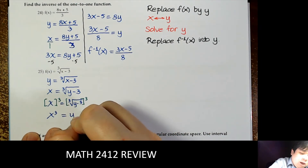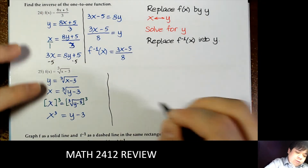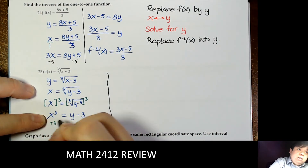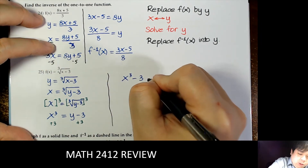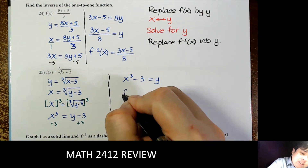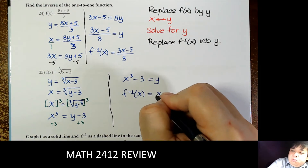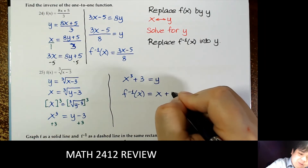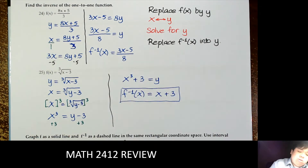So we have x cubed equal to y minus 3. Then add 3 on both sides, giving x cubed plus 3 equal to y. The notation for the inverse is f inverse of x equals x cubed plus 3.